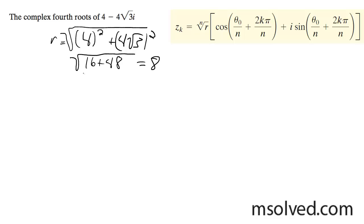So r equals 8. For our angle, you can factor out the 4 if it helps, so it's 1 minus √3. This is a 60-degree triangle at 270, so this is 330.